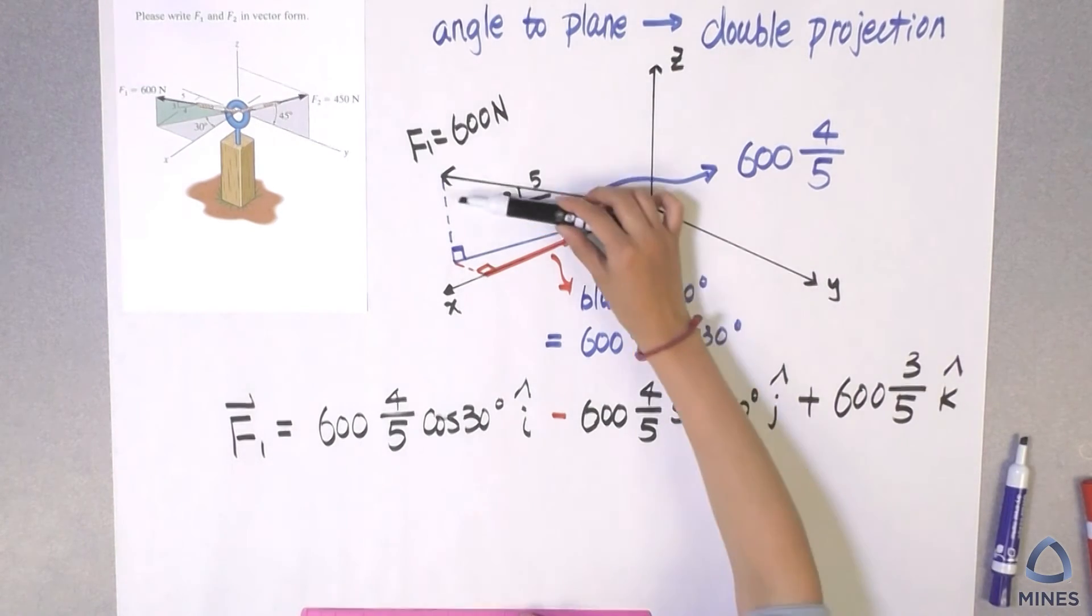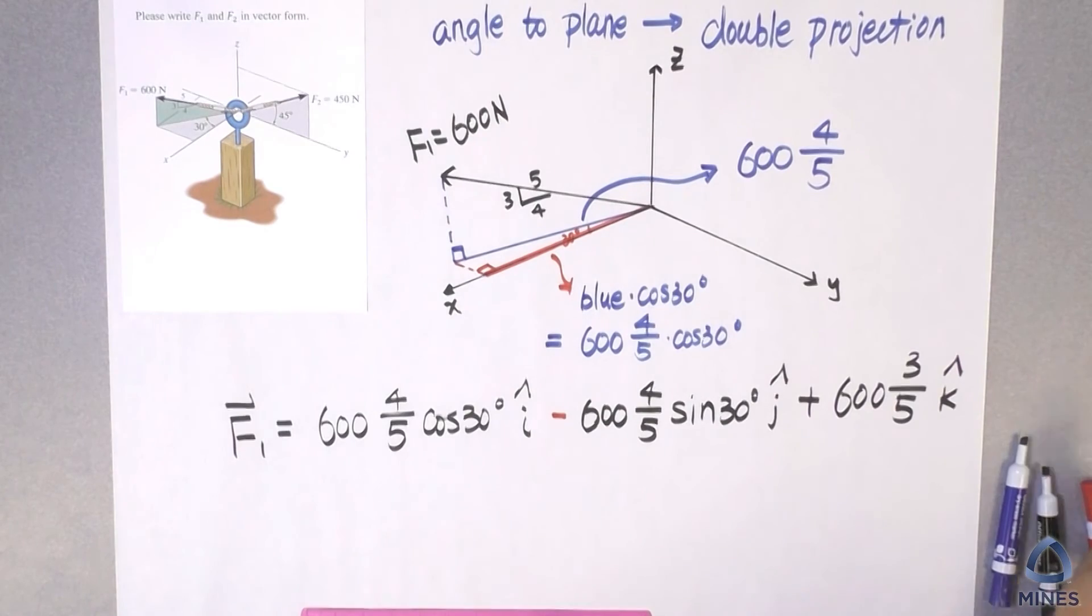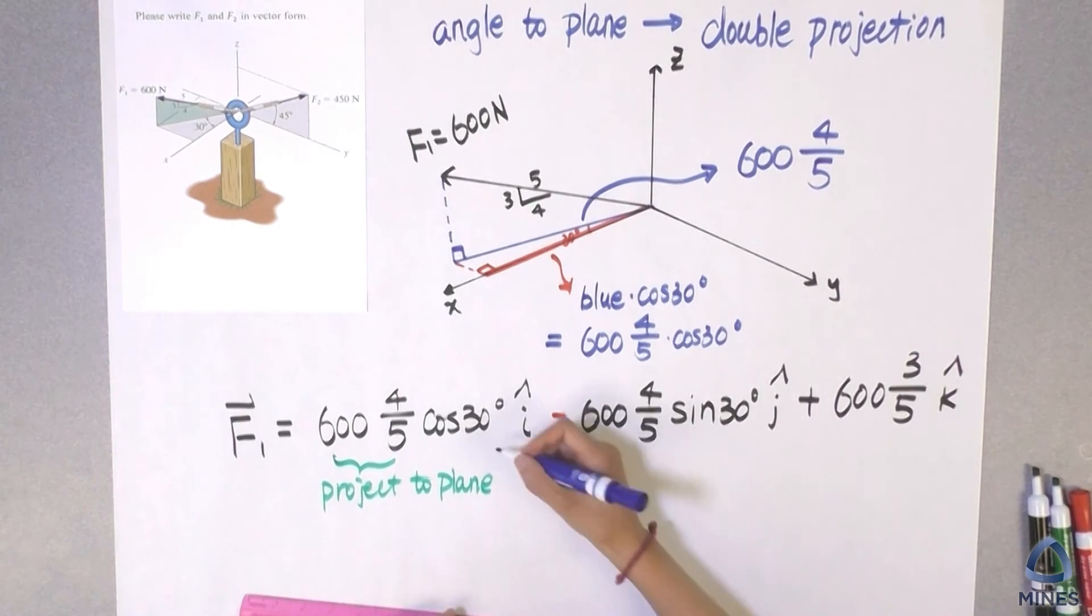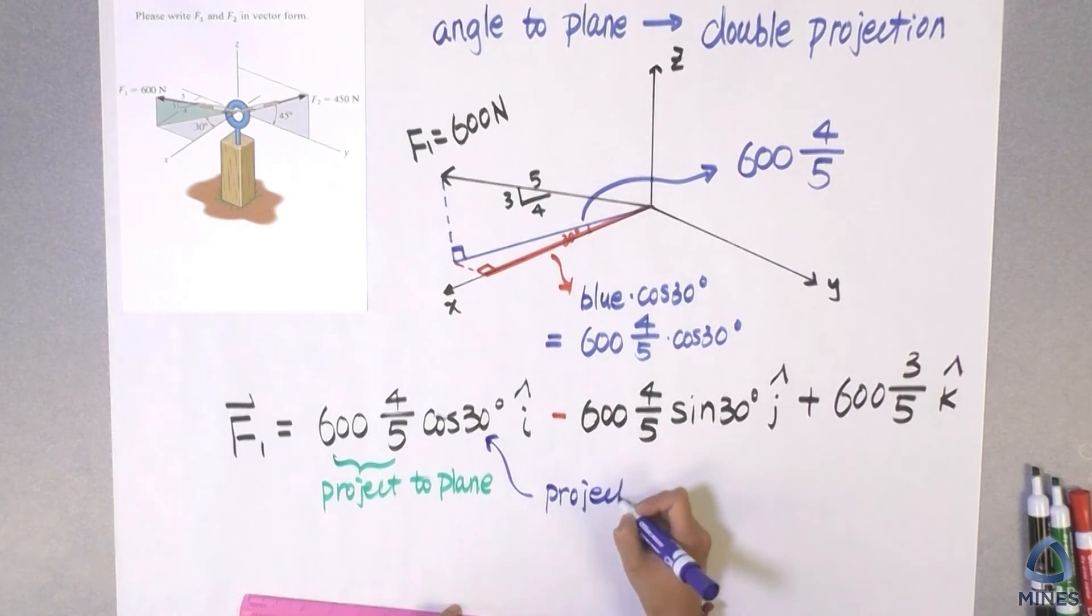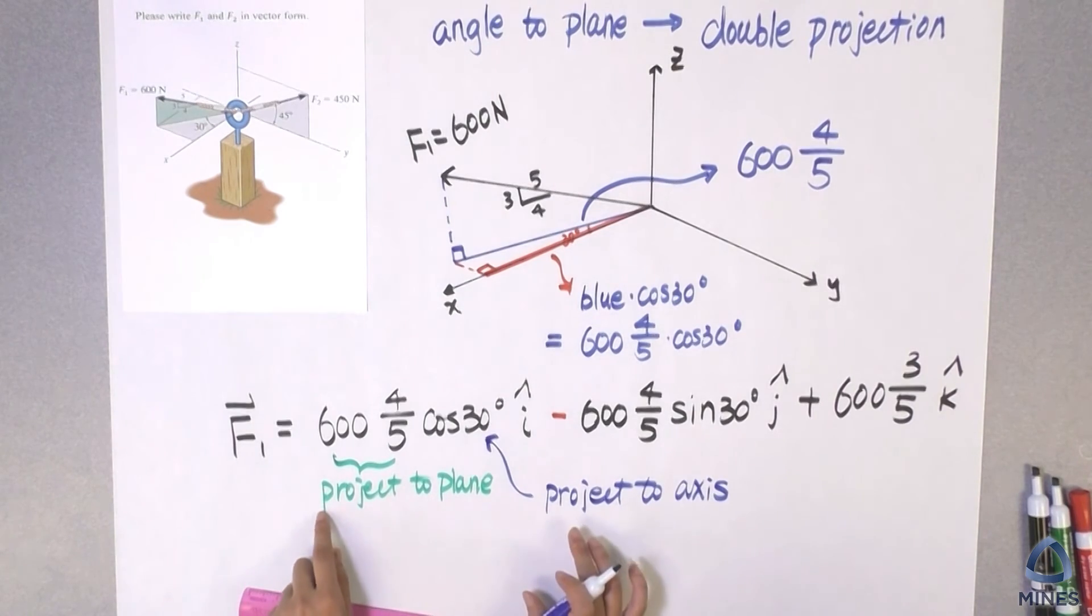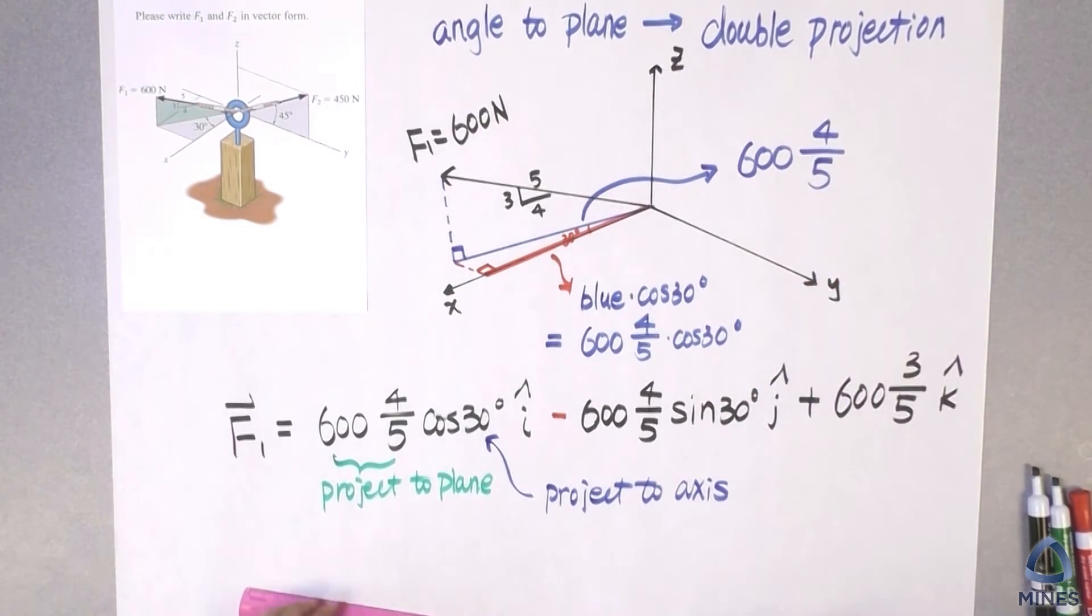So this is called a double projection because sometimes if we didn't have the angle directly to the axis, then you have to project to the plane first. And then you are going to use another angle so that you can project to axes. So which means we need to project twice. That's why it's called a double projection.